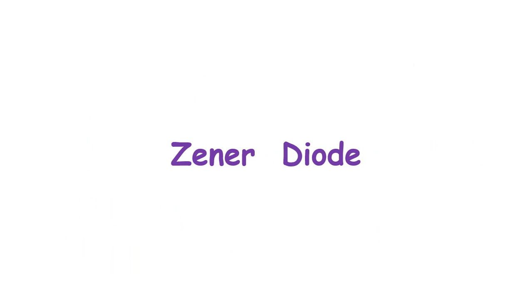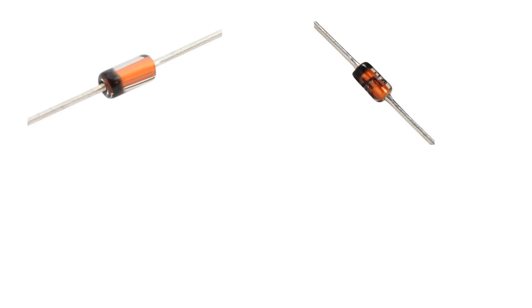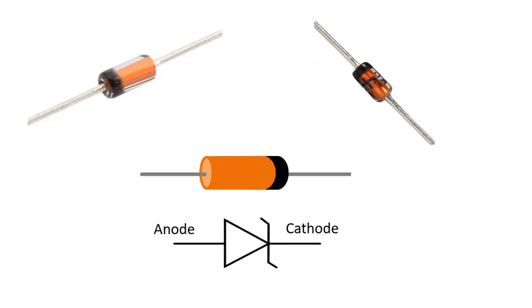Zener diode. They are diodes that keep the voltage applied to their ends constant. Zener diodes do not pass current up to a certain voltage value in the reverse direction. This voltage is called brake or Zener voltage.